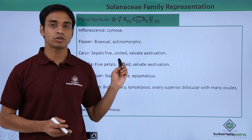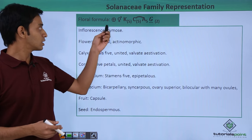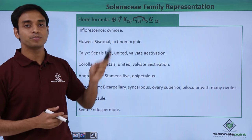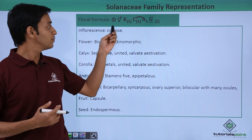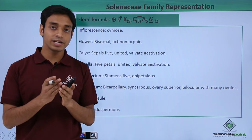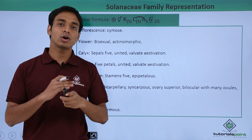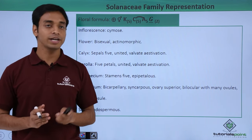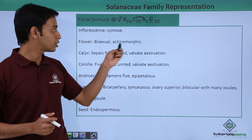First, let's see this symbol. This is the symbol for actinomorphic type of flowers. That means these flowers are radially symmetrical — they can be divided into two equal parts in any plane. So the flower is actinomorphic.